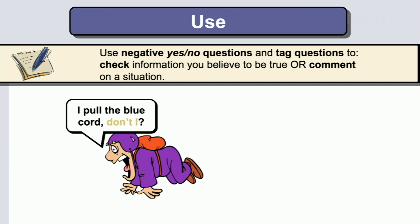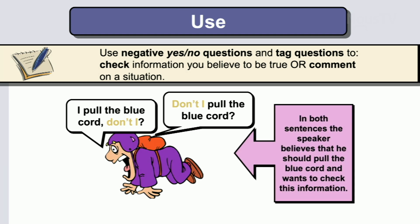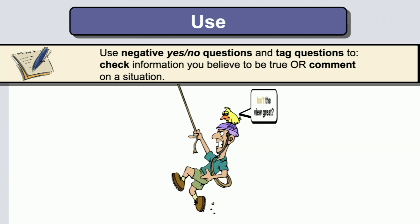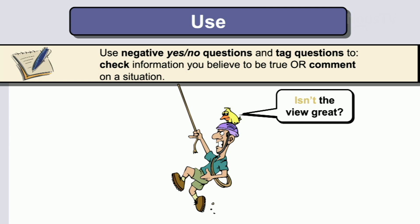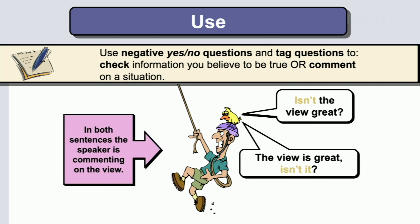Now look what's going on here. I pull a blue cord, don't I? Don't I pull a blue cord? I don't think he's ever parachuted. So both sentences — the speaker believes that he should pull the blue cord and wants to check this information. Use negative yes-no questions and tag questions to check information you believe may be true or to comment on the situation. Isn't the view great? The view is great, isn't it? In both situations, the speaker is commenting on the view.